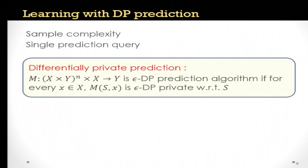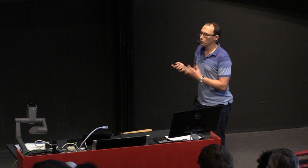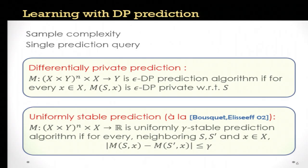That's a pretty natural definition. It's also closely related to the more standard notion of uniform stability from learning, which would ask that for an algorithm outputting a real-value prediction, the answers on two data sets differing in a single element on any point are within some parameter gamma. There are connections in both directions between these two notions.